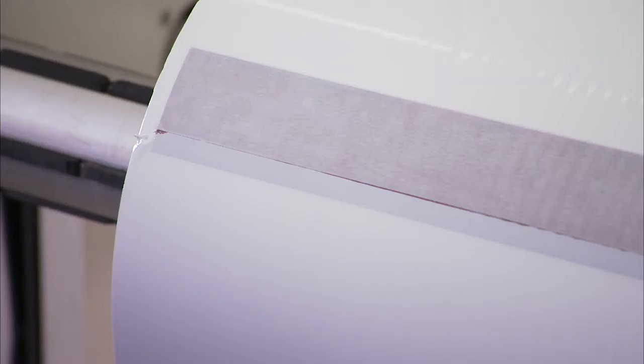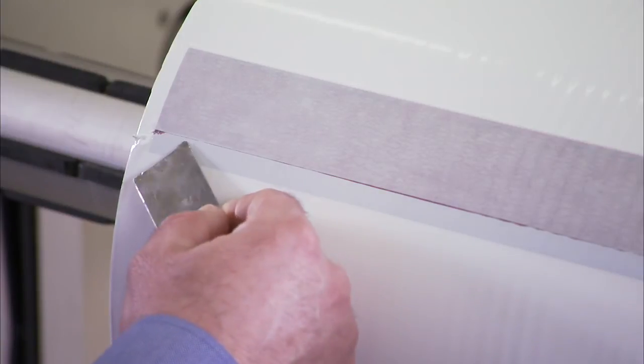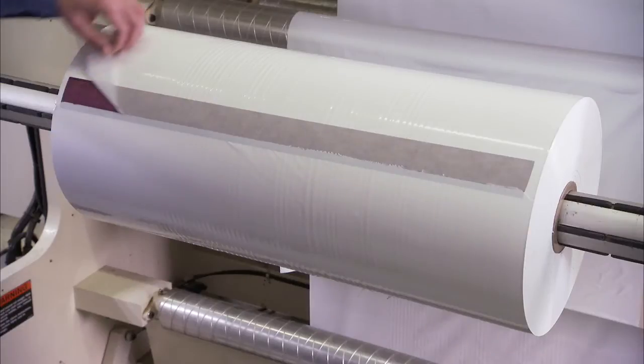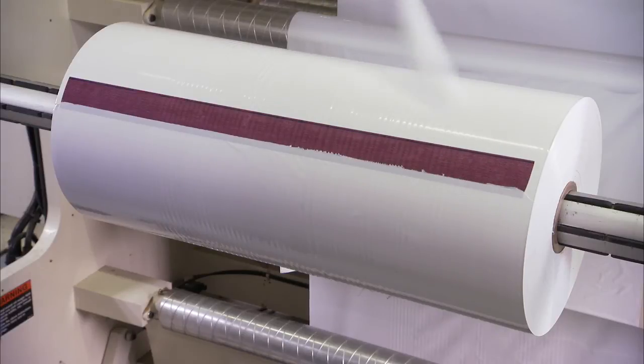To remove the upper liner, start about an inch in from the roll edge and from the center of the tape width, peel the upper liner off using an upward motion.